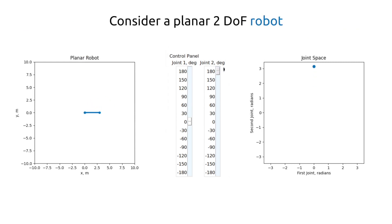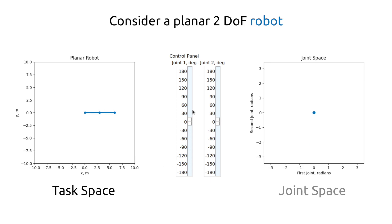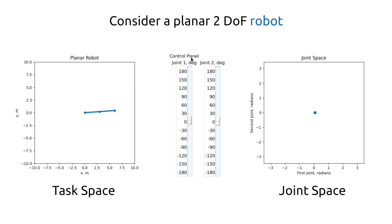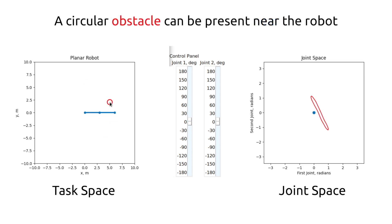Consider a planar robot with two degrees of freedom. On the left you can see the task space whereas on the right a joint space of the robot is visualized. A red circular obstacle can be placed next to the robot. You can see how task space collision renders itself to joint space collided state.